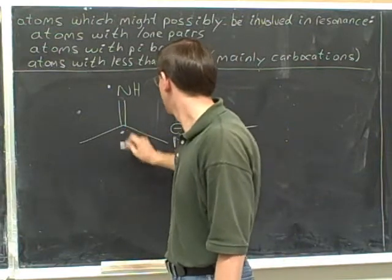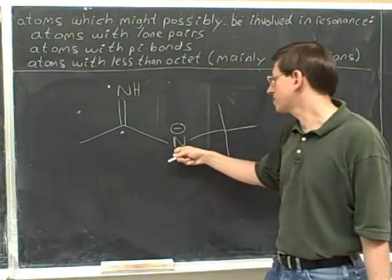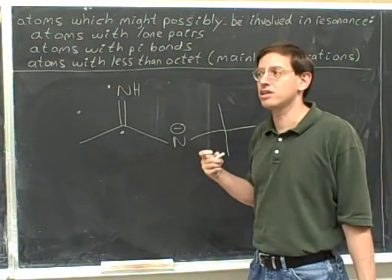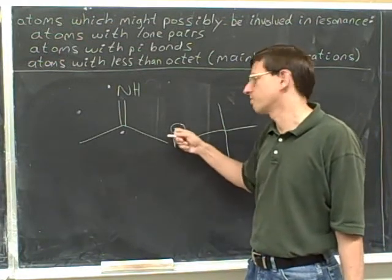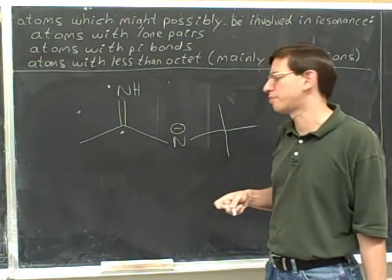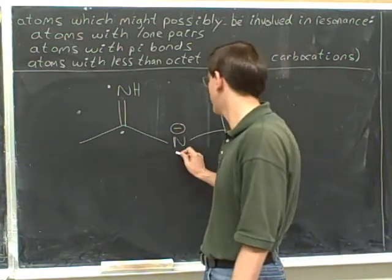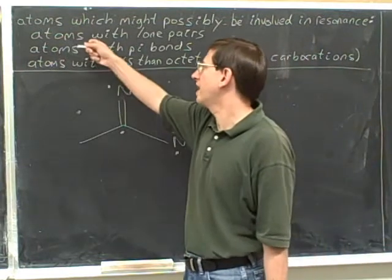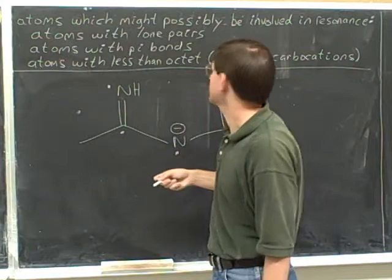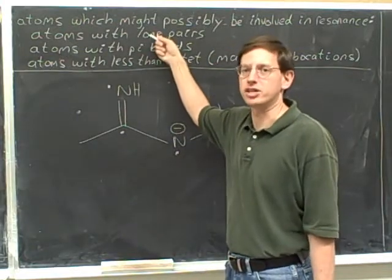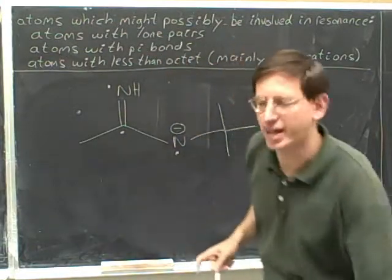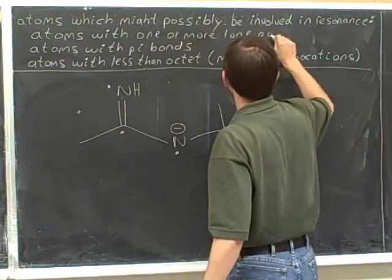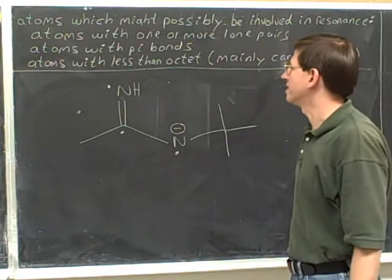Here we have a pi bond. Now this nitrogen has a negative charge, which means it has two lone pairs. If you didn't know that, you should make a flashcard that a nitrogen with a negative formal charge has two lone pairs. Even just one lone pair would allow you to participate in resonance. When we say that atoms with lone pairs can participate in resonance, we need one or more lone pairs — you only need one lone pair. Atoms with one or more lone pairs.